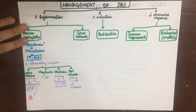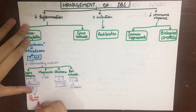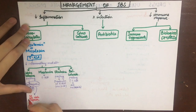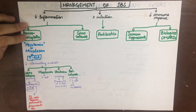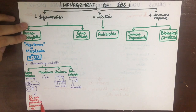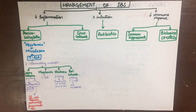The 5-ASA portion of sulfasalazine performs its anti-inflammatory role, but the sulfapyridine portion causes severe side effects such as skin rash, fever, hepatitis, pancreatitis, and pneumonitis. A useful way to remember this is that 5-ASA is anti-inflammatory while sulfapyridine is pro-inflammatory.